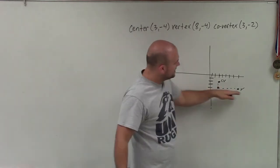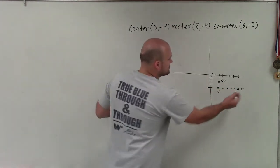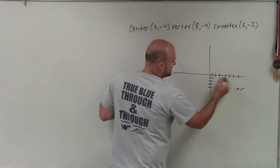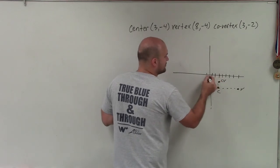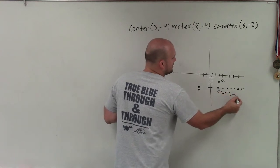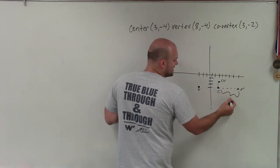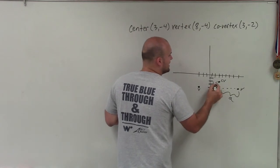Since the major axis has to contain both vertices, here is one vertex. All I need to do is replicate that distance. So 1, 2, 3, 4, 5—five units to the left—1, 2, 3, 4, 5, to determine my other vertex. The distance from the center to a vertex is a, and the distance from the center to a co-vertex is b.